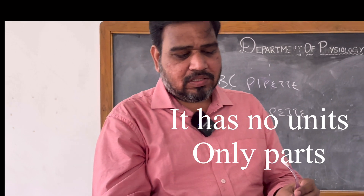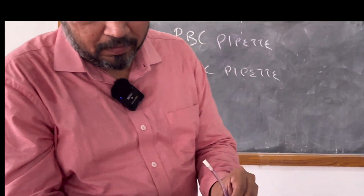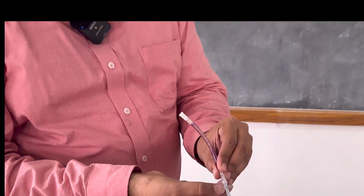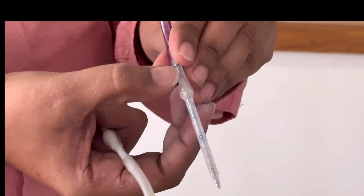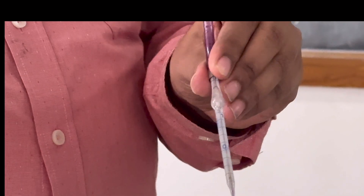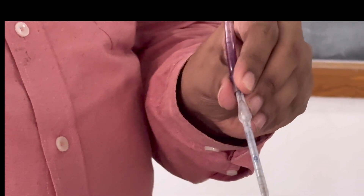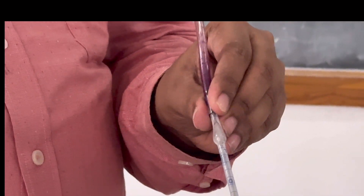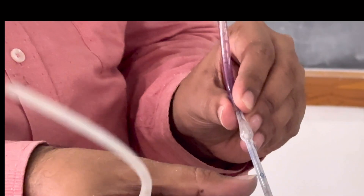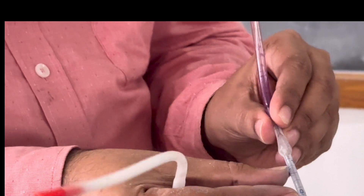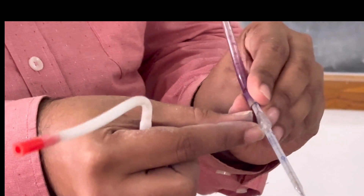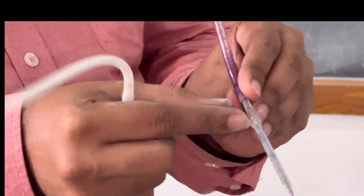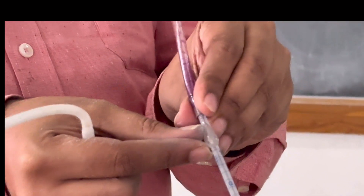Same thing for WBC — just concentrate here: 0.5, 1, 11. If 0.5 is marked, that is 0.5 parts. So 0.5 and 1 are equal parts on the stem, and 11 means this is 10 parts. So WBC pipette markings are 0.5, 1, and 11.